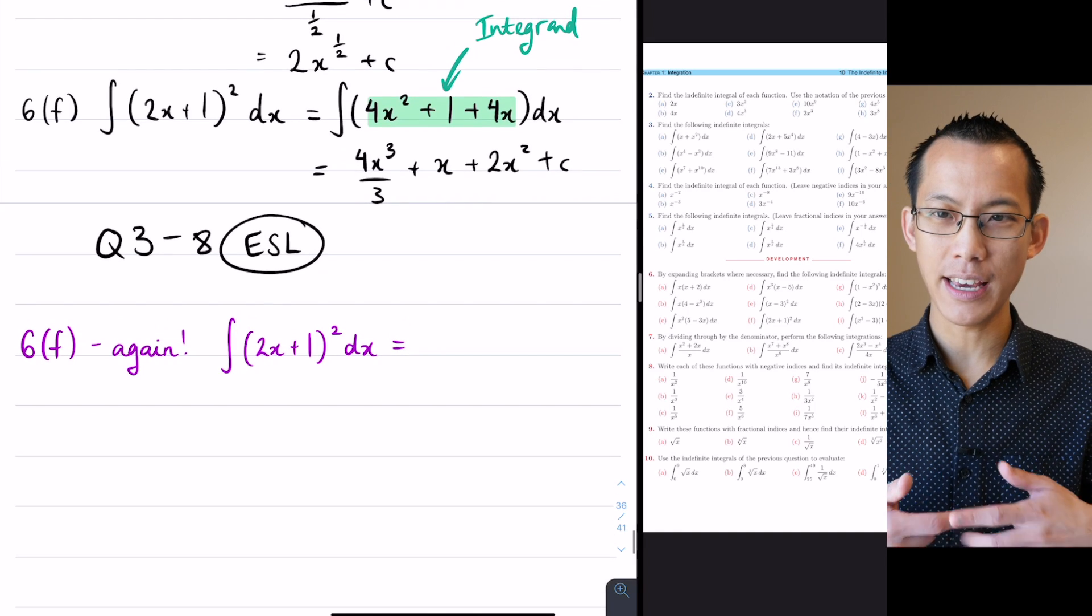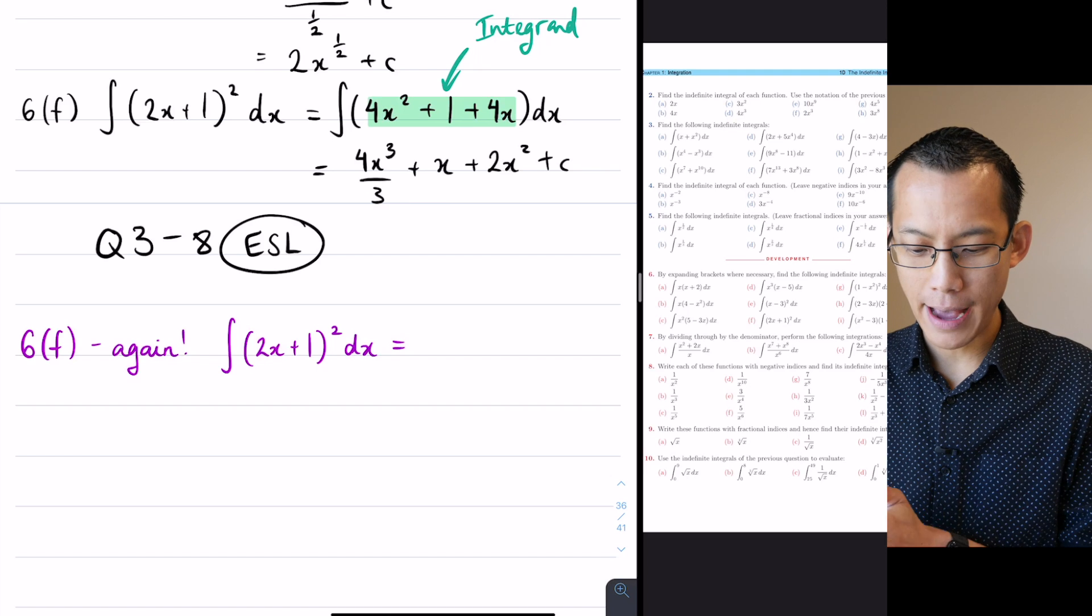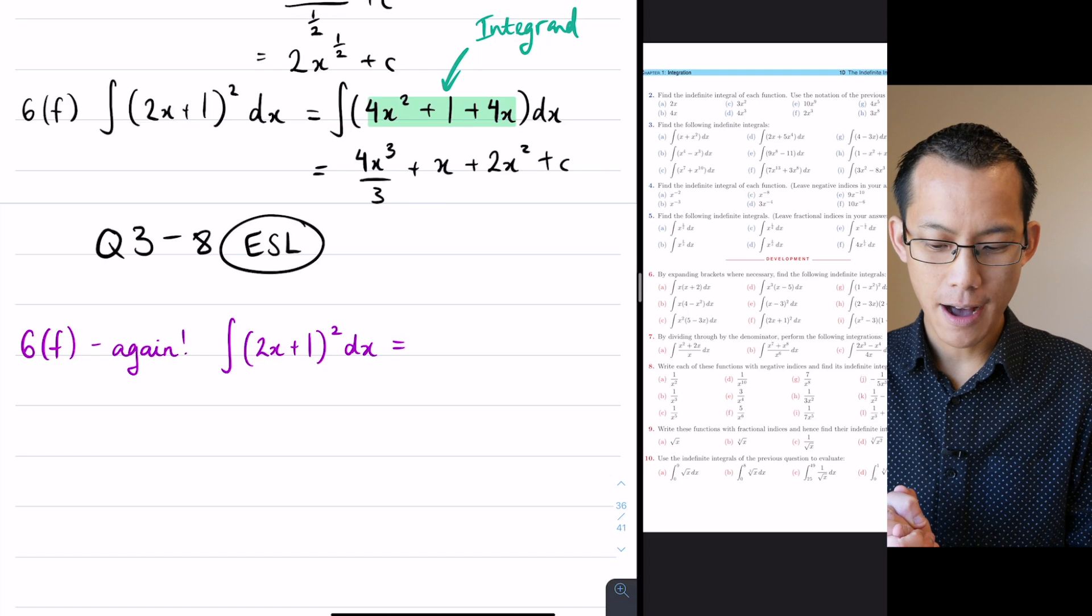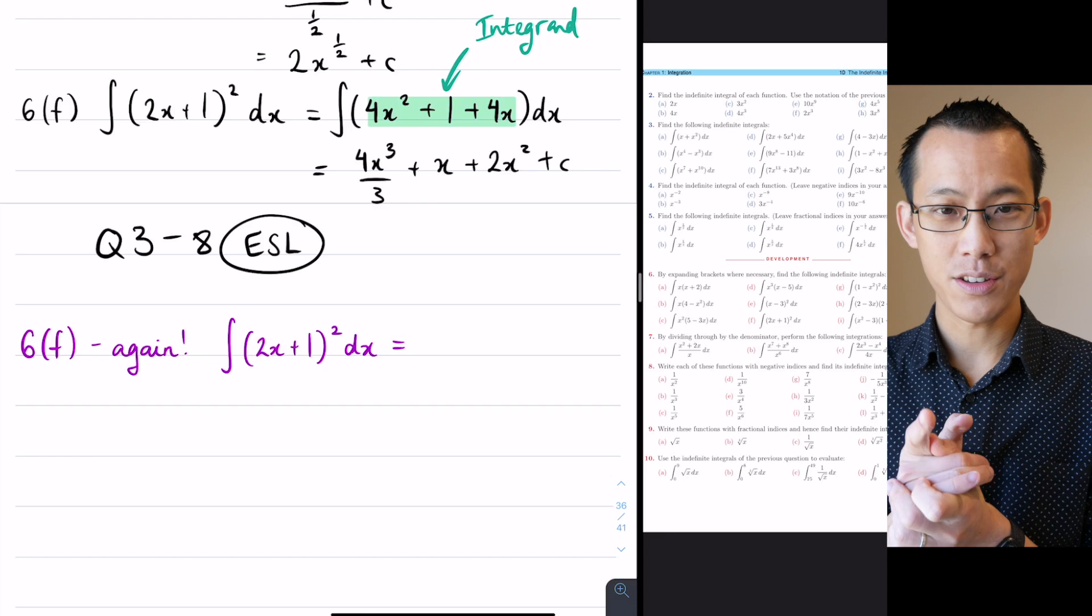As promised, into the second half of this, and I'm going to run through some examples from the back half of the exercise. But before I do that, I actually want to revisit 6f as promised.